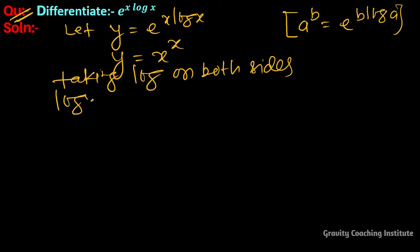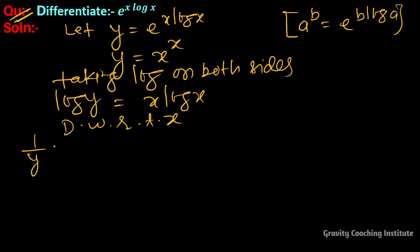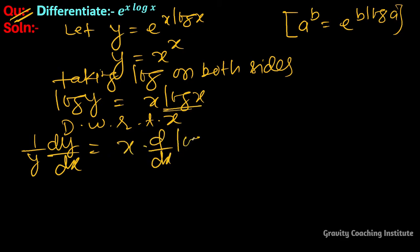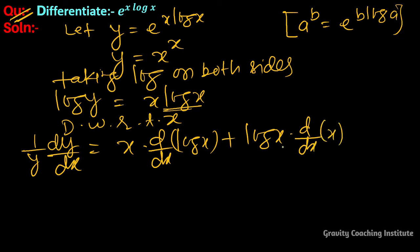log y equals x log x. Now differentiating with respect to x, 1 upon y times dy upon dx equals — here we use the product rule — x into differentiation of log x plus log x into differentiation of x.